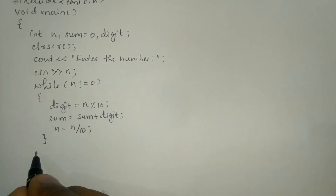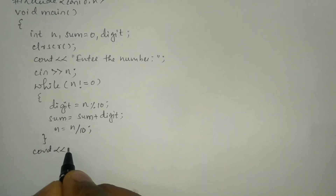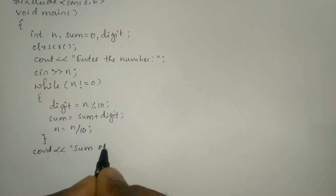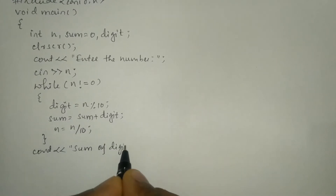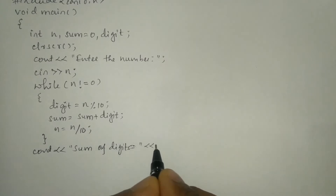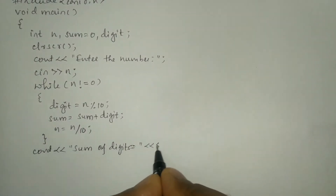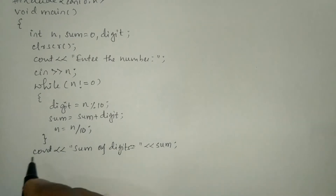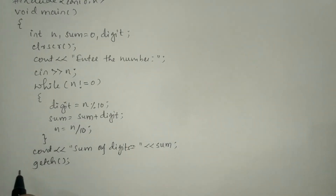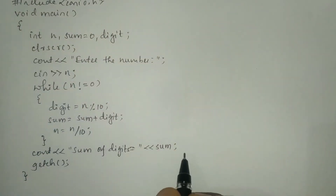Now let us write the cout statement. So cout with the stream insertion operator — in double quotation marks I'm going to write 'Sum of digits = ', end the double quotation mark, stream insertion operator, and the value stored in the variable sum. Put a semicolon, write the getch() function, and the curly closing brace for the main function.